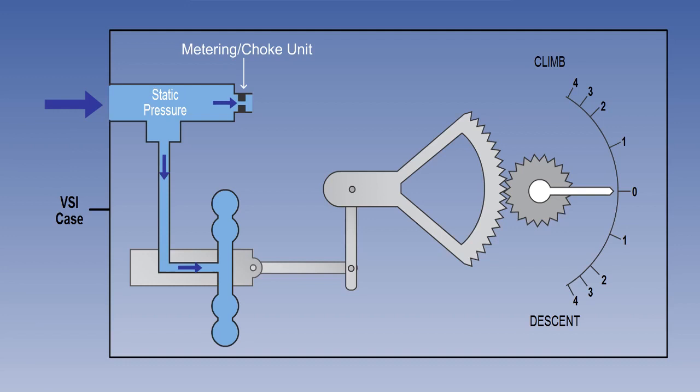The metering unit self-compensates for these changes. To achieve this, static pressure is directed through a capillary tube and an orifice in the restrictive choke of the metering unit. The effects of the static pressure in both these components combine to self-compensate for pressure variations with altitude and temperature, thereby giving a near consistent indication of rate of climb or descent, whatever the altitude or temperature.